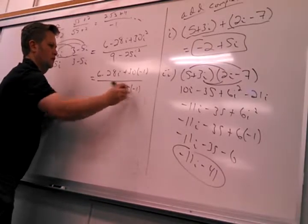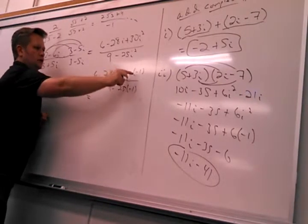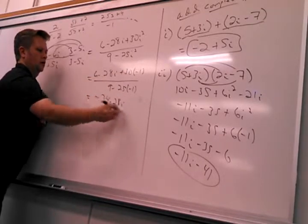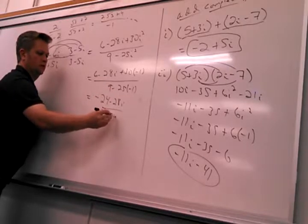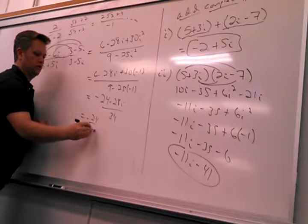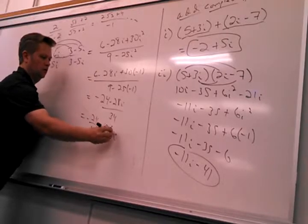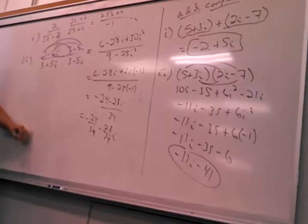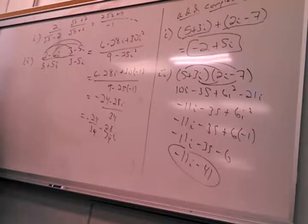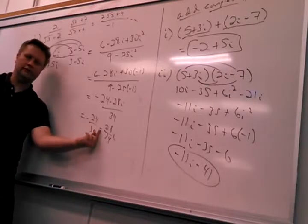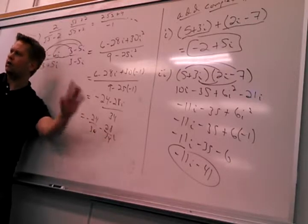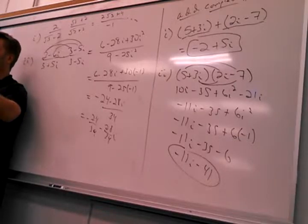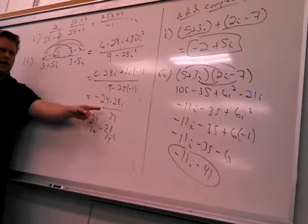So I get 6 minus 30 over 9 plus 25. Do you notice I can go one more step? Two complex numbers when I divide them, the answer should be a complex number. What does a complex number look like? a plus bi. So I should end up in that form, I should be able to put it in that form. Is it okay if we leave it like that? It's beautiful.